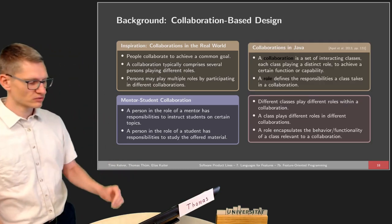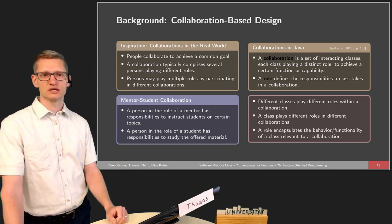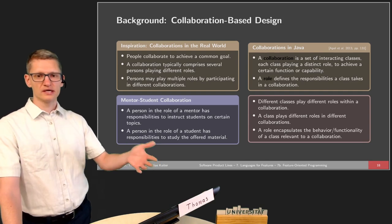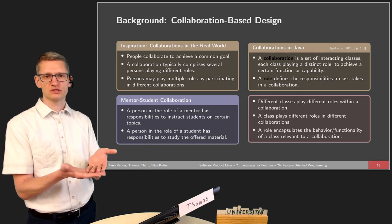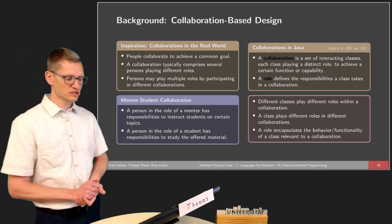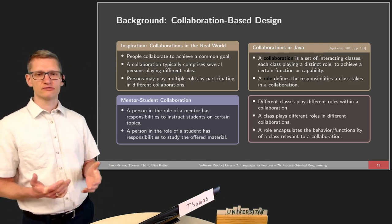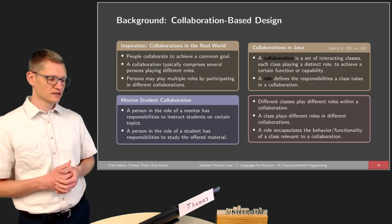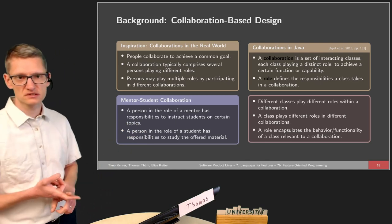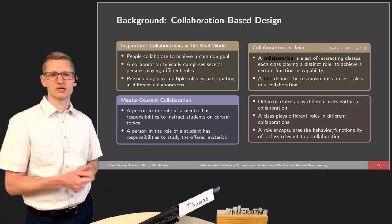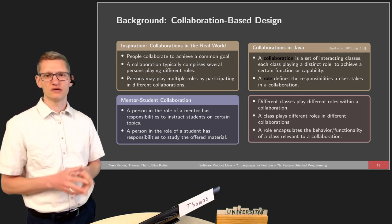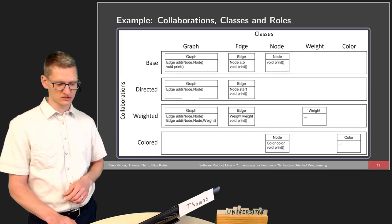In Java, a collaboration is a set of interacting classes, each class playing a distinct role to achieve a certain function or capability. At runtime, this can mean objects are actually interacting with each other — it doesn't need to be purely static at the class level. A role defines the responsibilities a class takes in a collaboration. A class can be in multiple collaborations and takes different roles in those. A role encapsulates the behavior of a class relevant to a collaboration. We will have examples later to clarify this.